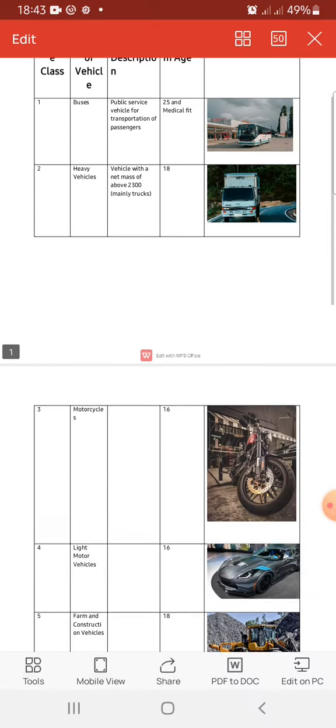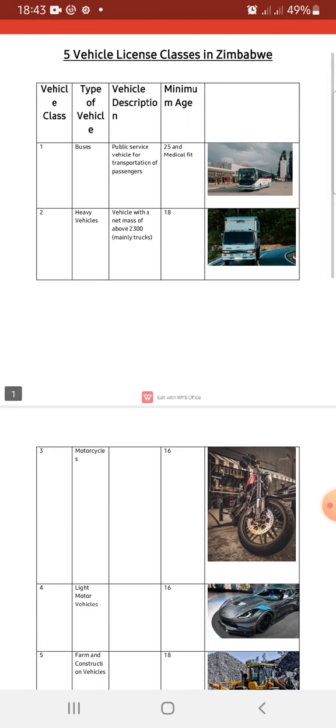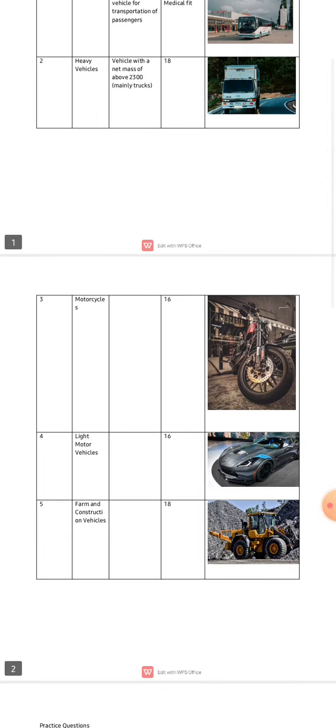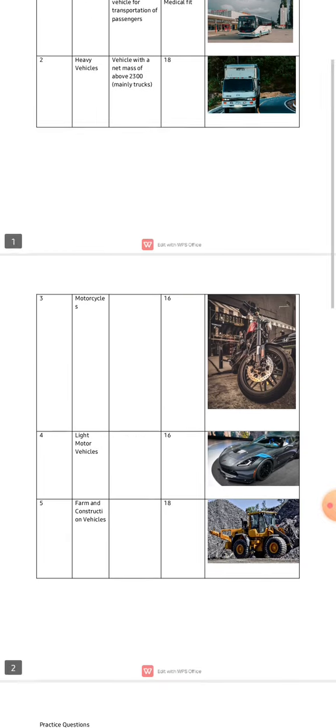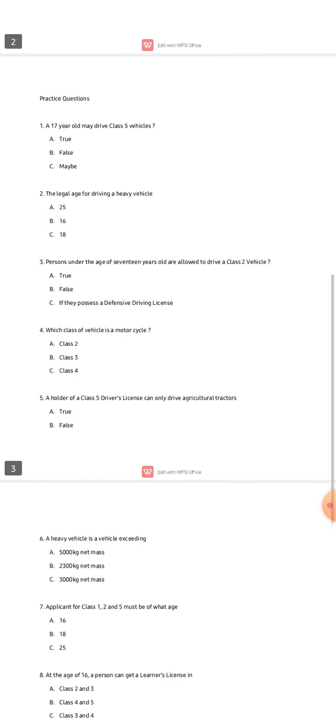Now we have covered the five vehicle classes. Class one for buses, class two for trucks, class three for motorcycles, class four for light motor vehicles, and class five for farm and construction vehicles including earth-moving machines. We are now going to look at some practice questions to give you a deeper understanding.